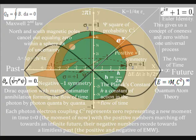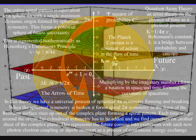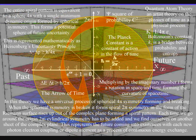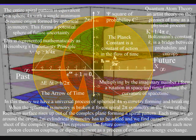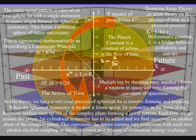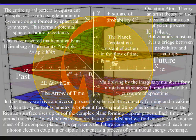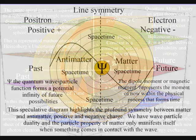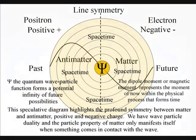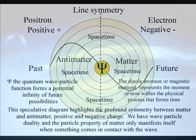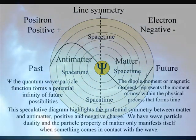Matter, in the form of electron waves of probability, is being created into particles when a light wave comes in contact with them, forming a photon-electron coupling. This represents the moment of now in that reference frame, with time symmetry between matter and antimatter — the antimatter representing the past.